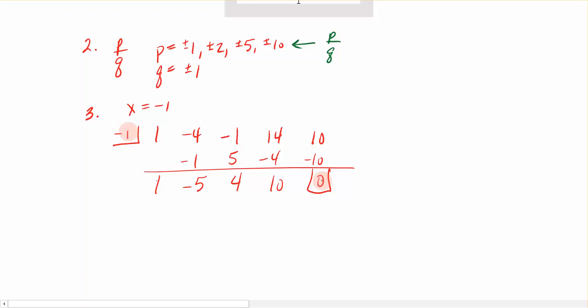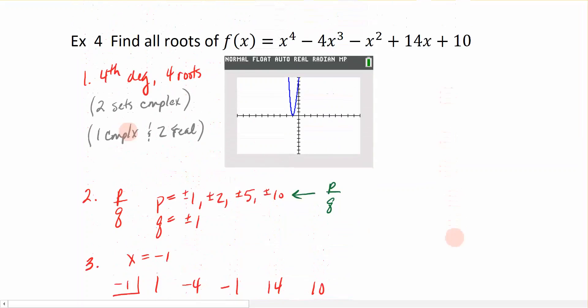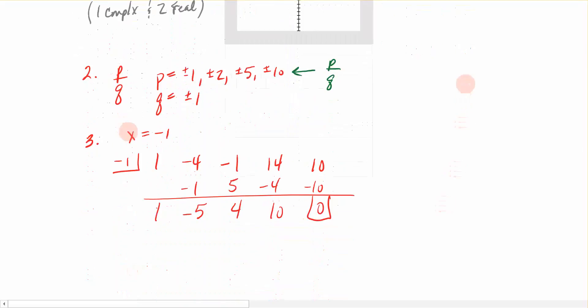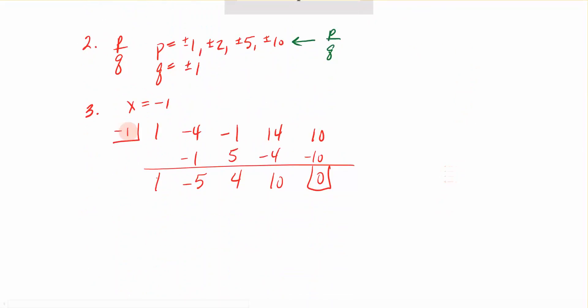If I get a remainder of 0, then this was a factor. So I know I did it right. Because this is a 4th degree polynomial and I divided it by basically x, I ended up with a 3rd degree polynomial. This is x cubed minus 5x squared plus 4x plus 10.